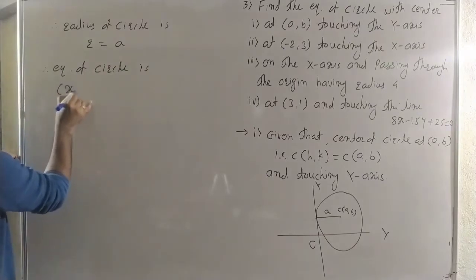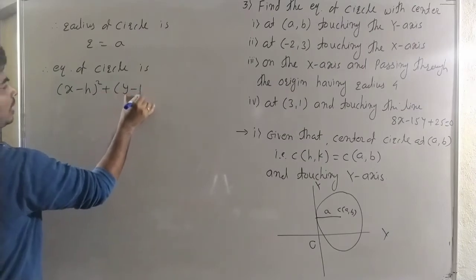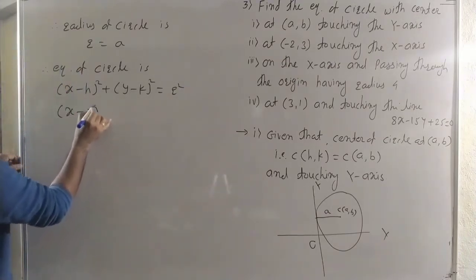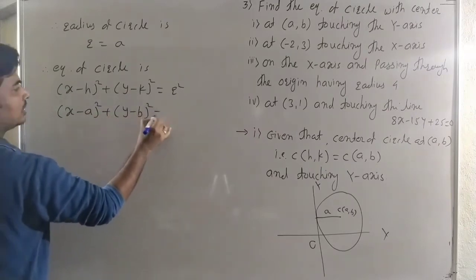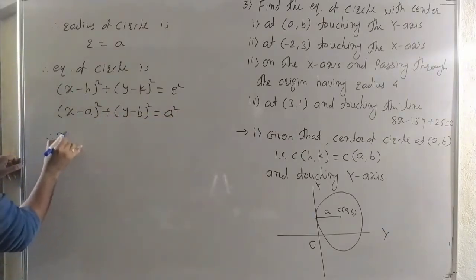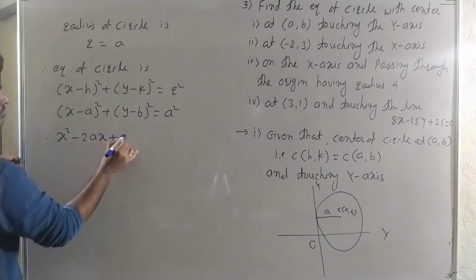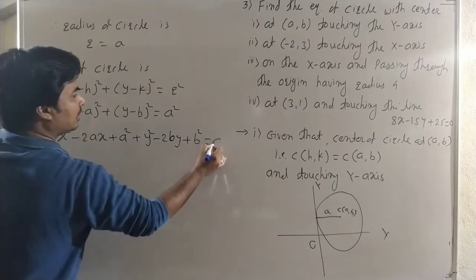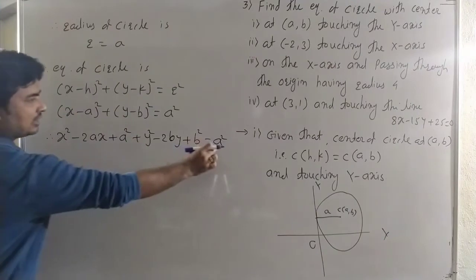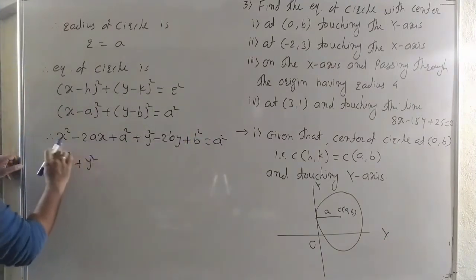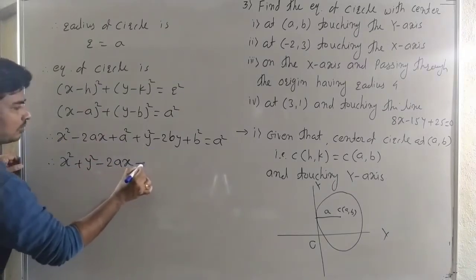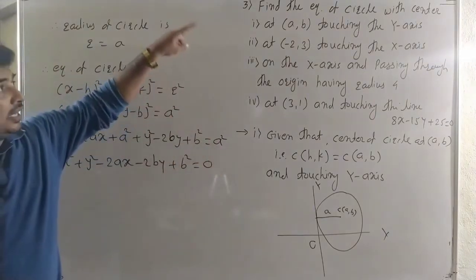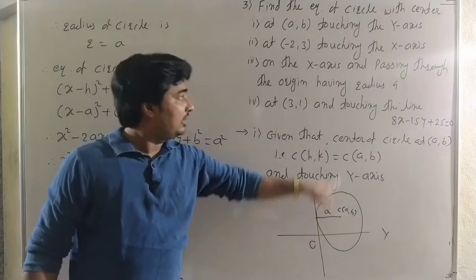Therefore the equation of circle is (x - h)² + (y - k)² = r². Here h = a, k = b, and r = a, so we write (x - a)² + (y - b)² = a². Expanding: x² - 2ax + a² + y² - 2by + b² = a². The a² terms cancel, giving us x² + y² - 2ax - 2by + b² = 0. This is the equation of the circle with center (a, b) and radius a, when the circle touches the y-axis.